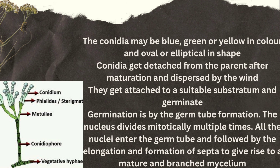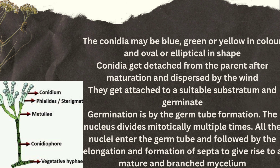After maturing, the conidia detach from the parent cells and disperse in the wind. They then attach to a suitable substratum and begin germination. Germination occurs by germ tube formation, followed by elongation and the formation of septa, ultimately giving rise to a mature and branched mycelium, which grows into a new Penicillium.